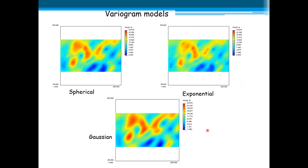Now we are going to see the effect of the variogram model type on the estimates — how the estimated maps change with the variogram parameters. Here we have the spherical model, exponential model, and Gaussian model. As you can see, there is a substantial difference between, for example, the Gaussian and the exponential, which are, as we have seen in the previous lectures, pretty different variogram models.